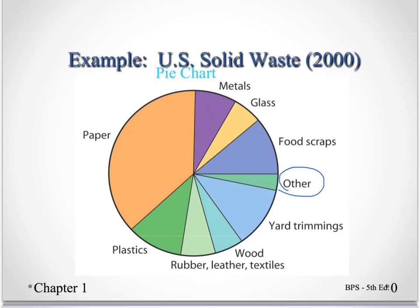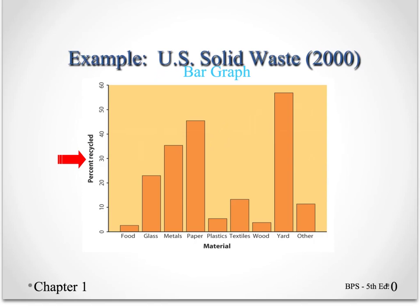That 'other' category allows you to still have 100% of the data and use a pie chart. Here is the analogous bar graph for solid waste percent recycled — this does not go back to the same data table, but it shows how we can use a bar graph in the same way.